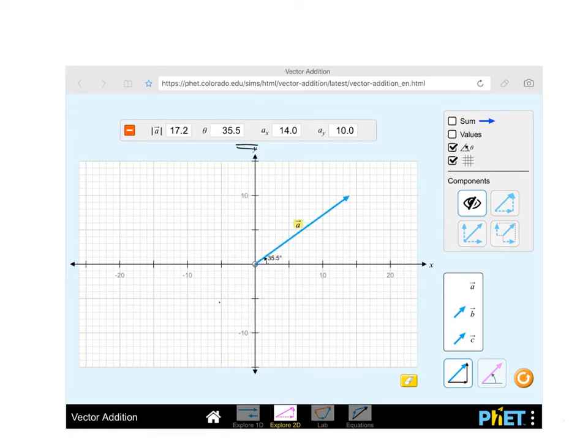So let's say we have this vector right here. We know that from our navigational directions, we have north, east, south, and west.